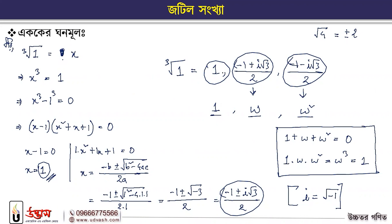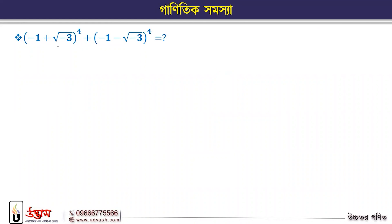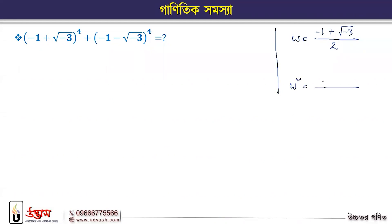So given minus 1 plus root over minus 3 to the power 4, plus minus 1 minus root over minus 3 to the power 4 — let's go to account it. Omega: minus 1 plus i root over 3 divided by 2. Root over minus 3 — not divided by 2. Omega square: minus 1 minus root over minus 3 divided by 2.